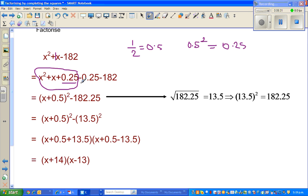And so this has become a perfect square. And this is also a perfect square. So this is (x+0.5)²-182.25. Then you can check this on the calculator. Square root of 182.25 is 13.5. Or the same thing is 13.5²=182.25.